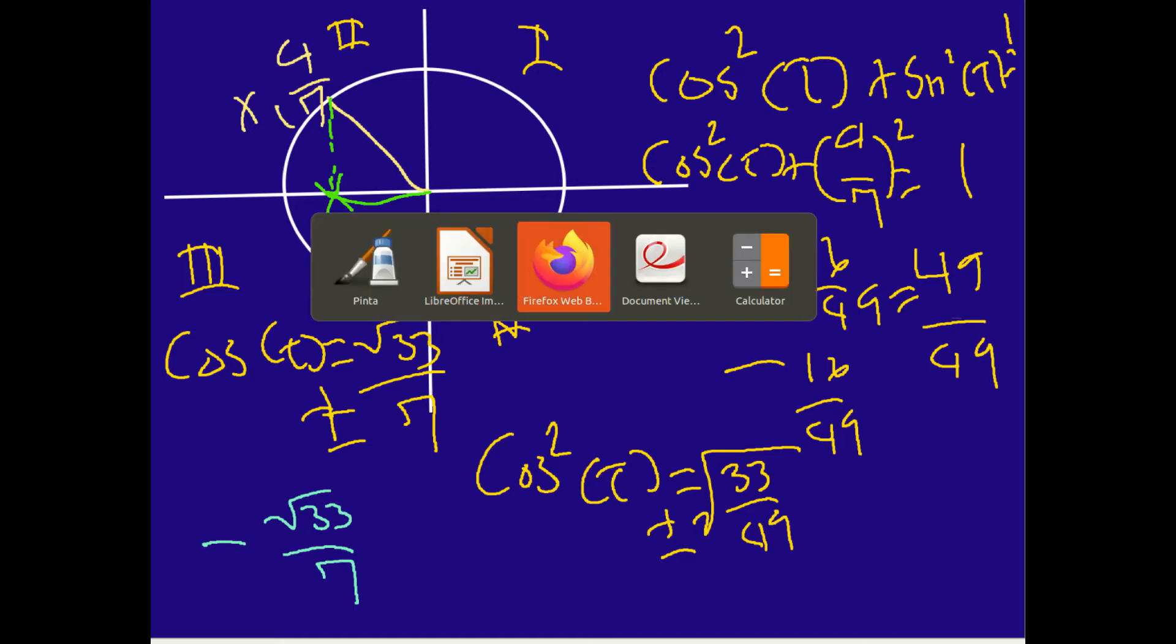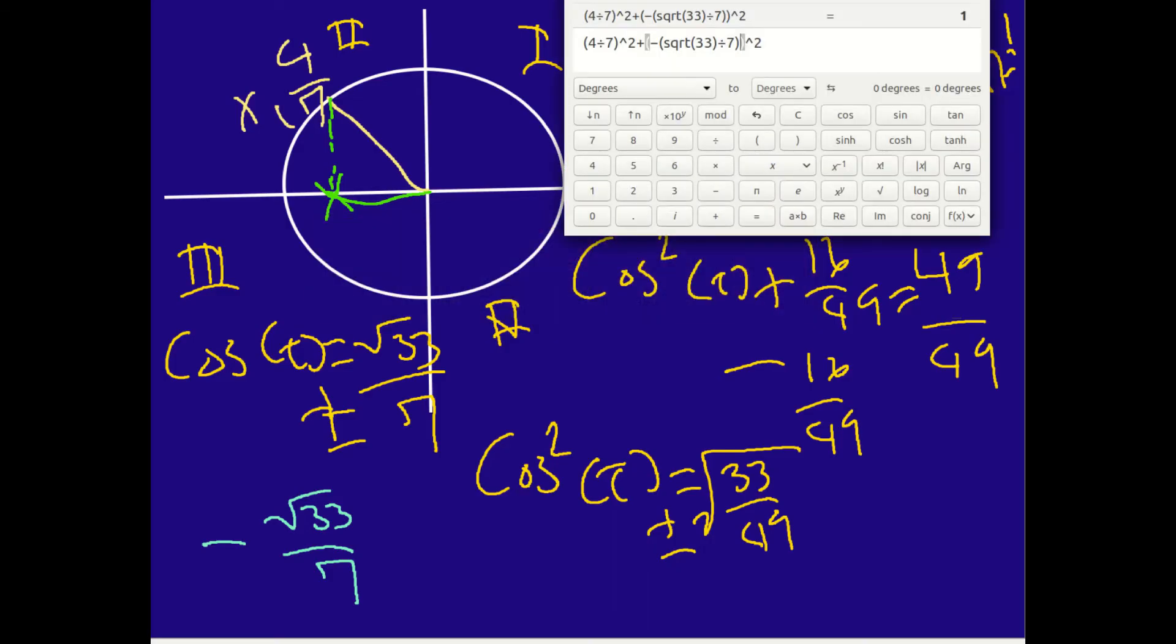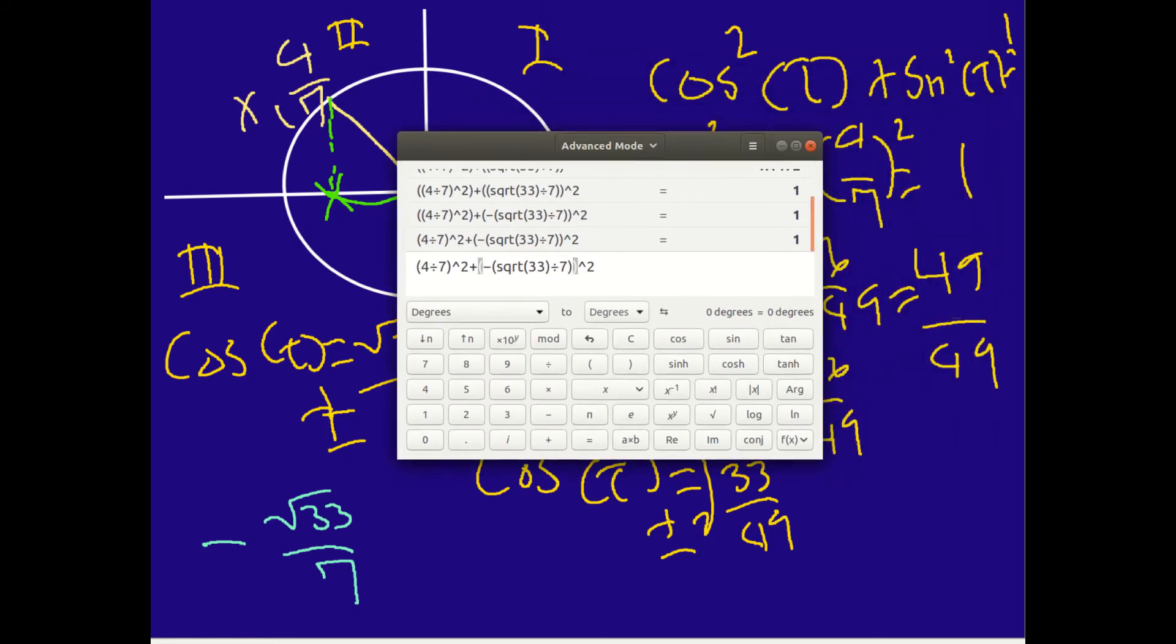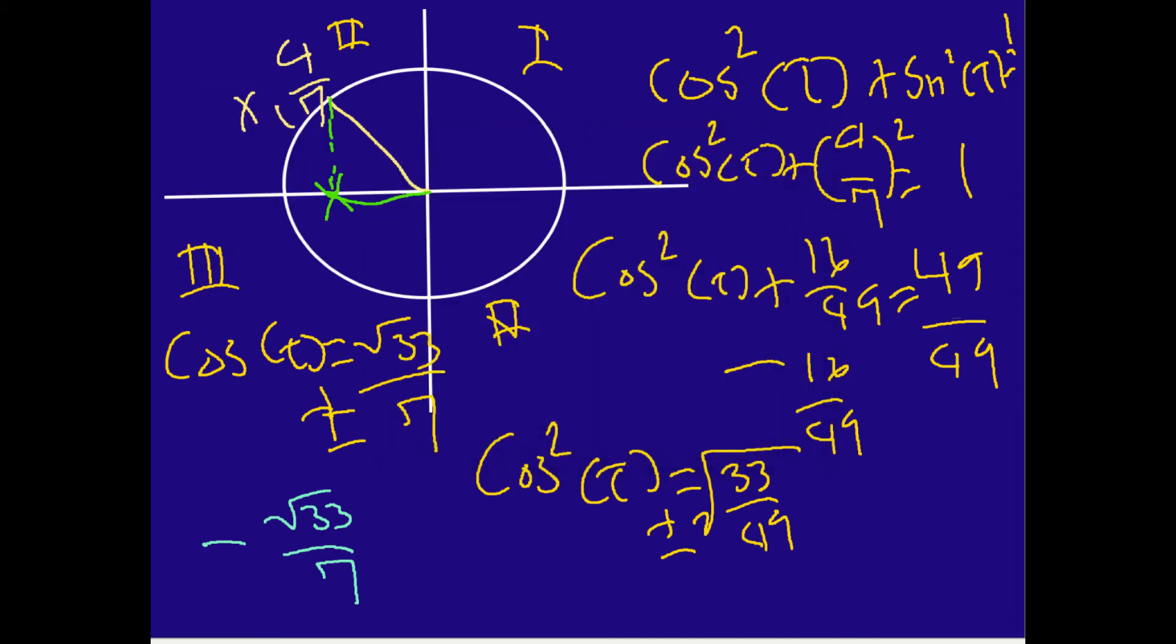Now, we can confirm this by putting this in the calculator. So, if you take a look at this calculator right here, I kind of already put the information in there. And so, you can see here we got 4 over 7 plus the minus and negative square root of 33 divided by 7 squared. This is all the original information. And when I put all this into the computer, I get positive 1. And that's the beauty of it. So, we've confirmed that our answer is correct. So, now we know without a shadow of doubt that the x coordinate right here on the unit circle is going to be negative square root of 33 over 7. We've confirmed that. And this is what you can do with the Pythagorean identity when you're trying to find the coordinate on the unit circle.